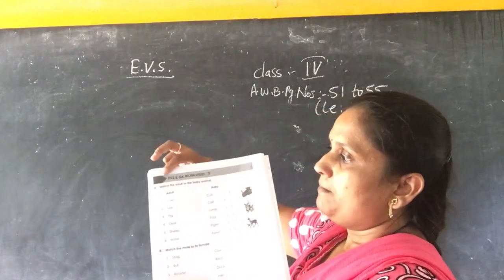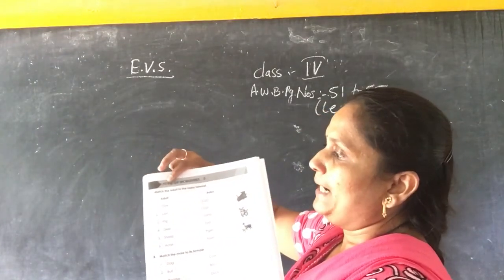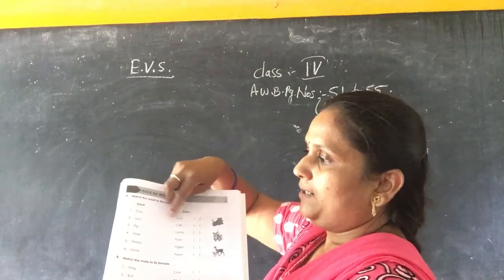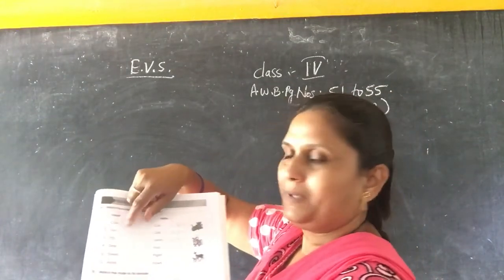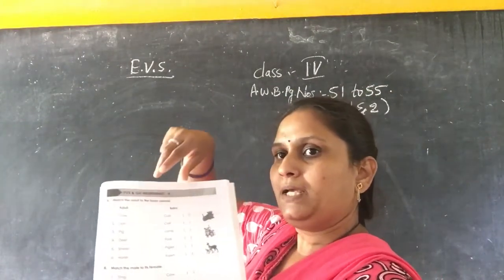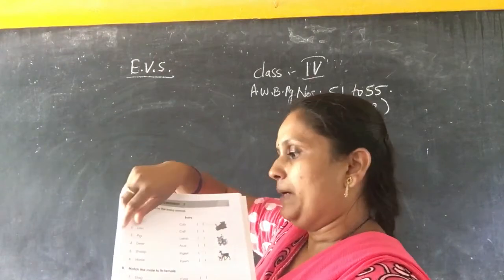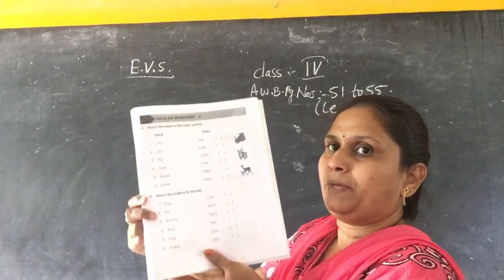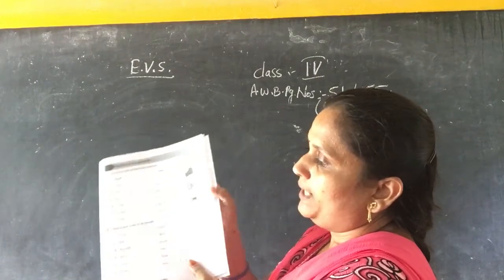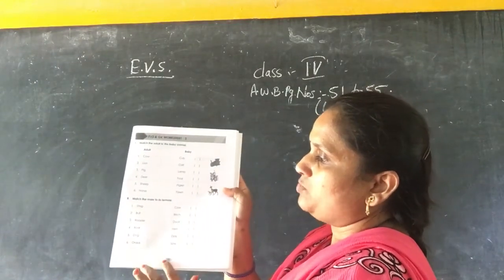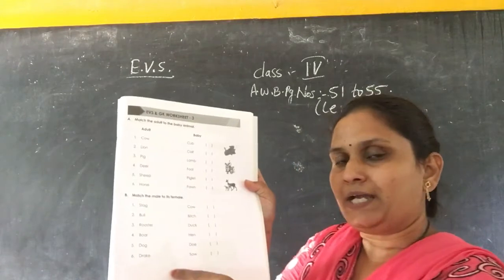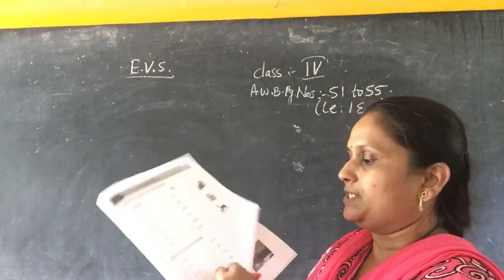Next, match the adult to the baby animals. Cow — calf, lion — cub, like that. Check out the baby animals for the given mother animals. Also, regarding the males and females, what they will be — write that. This activity is already completed in the textbook itself.